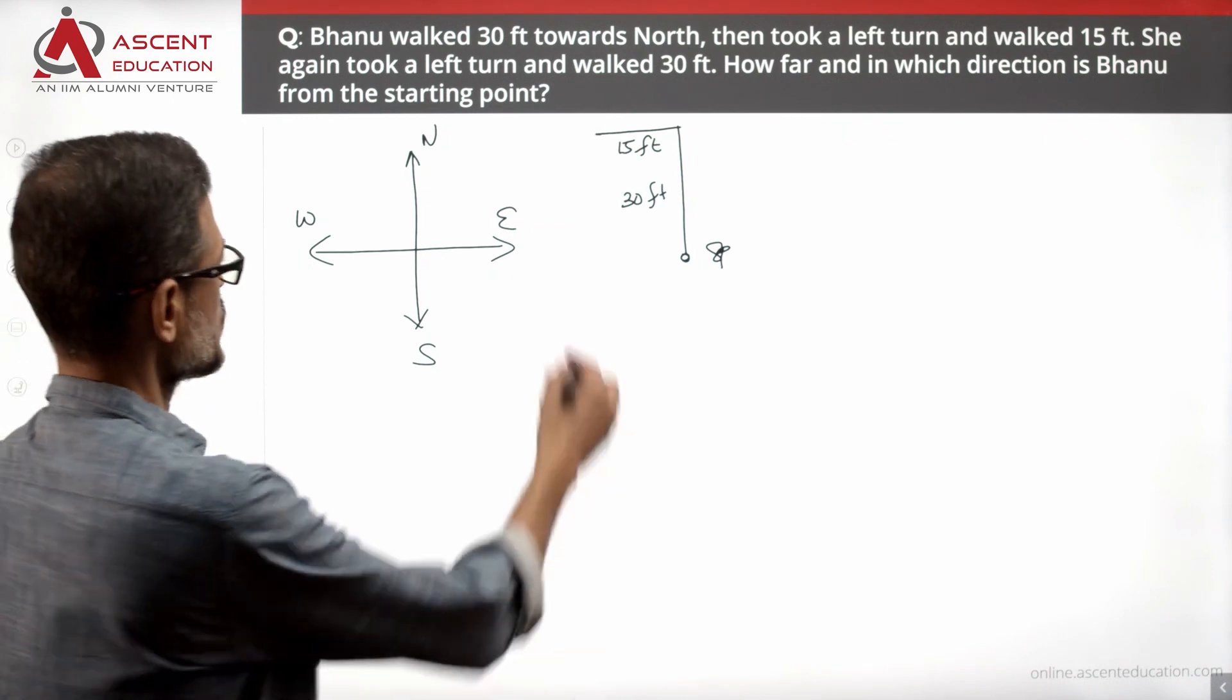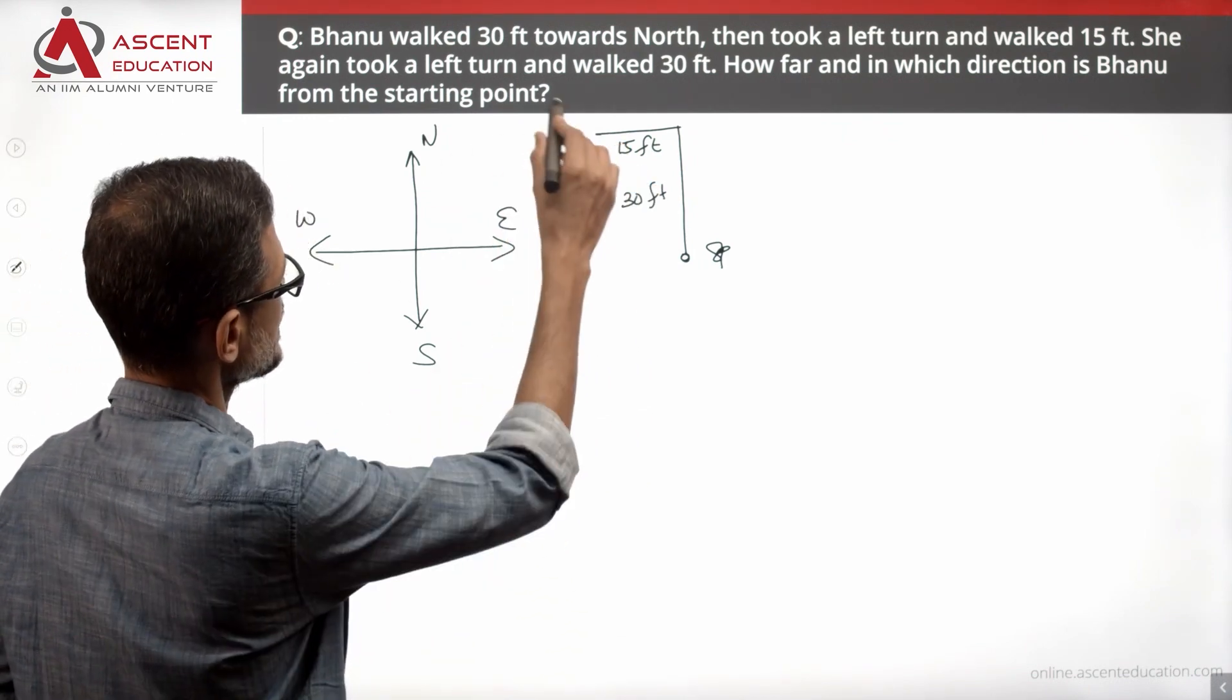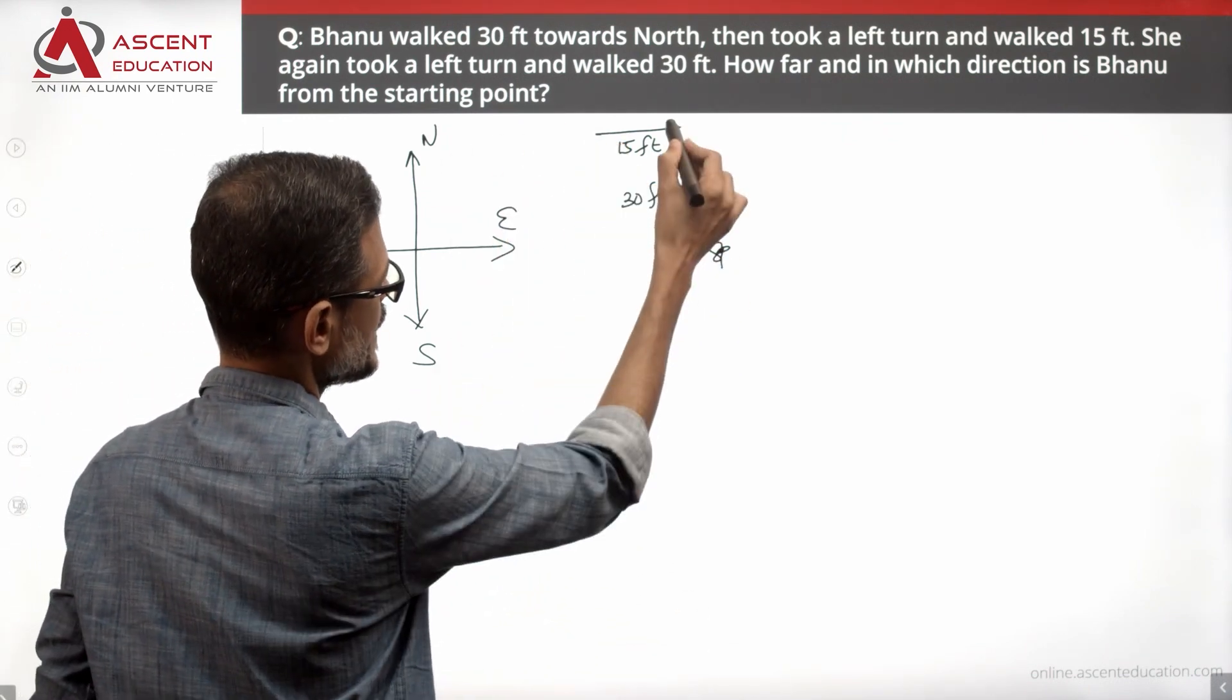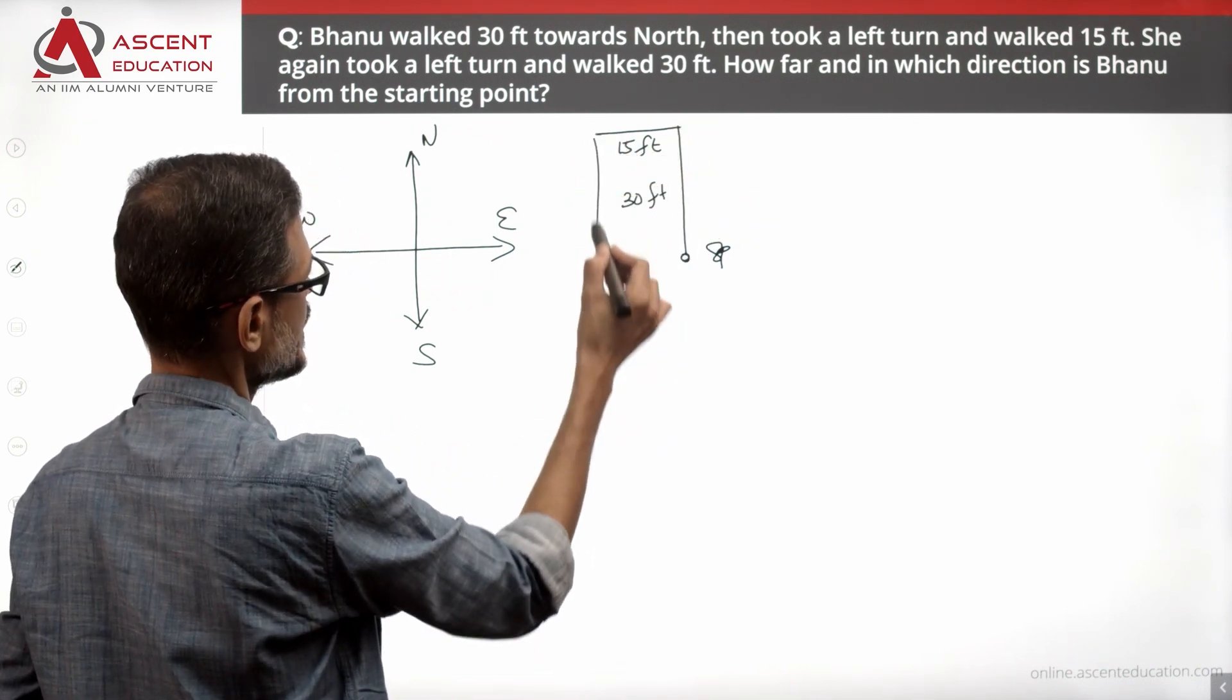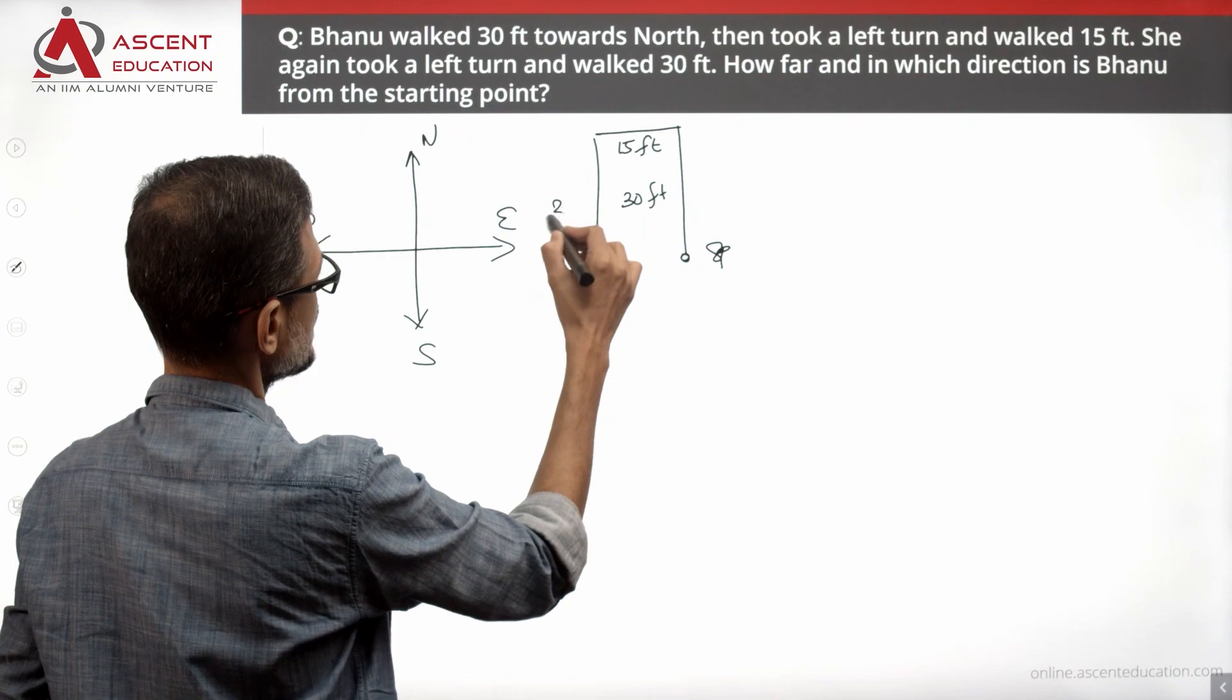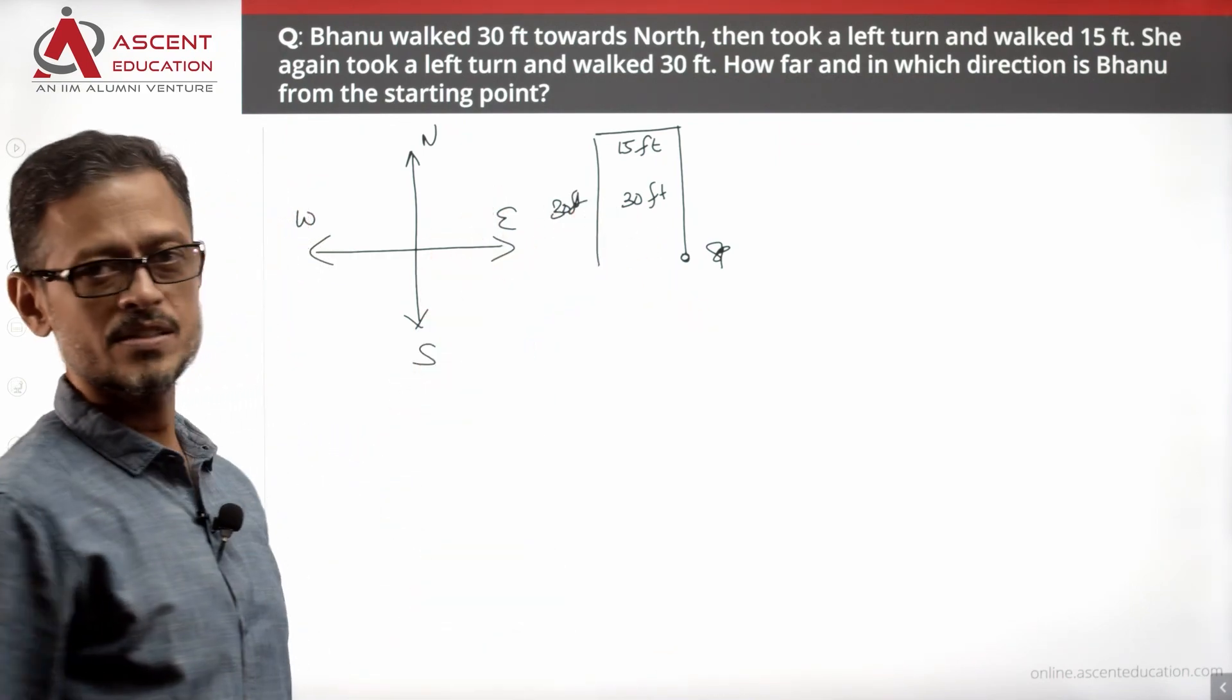She again took a left turn from that point, and then walked 30 feet. 30 feet up, 15 feet to the west, and now she is walking 30 feet after taking a left turn. This is going to be 30 feet towards the south.